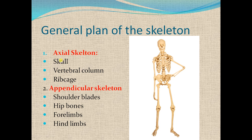General plan of the skeleton: skeletons are usually divided into two portions — axial skeleton and appendicular skeleton. The axial skeleton consists of the skull, the vertebral column which is present on the dorsal side, and the rib cage. Here is the skull and here is the shoulder blade.